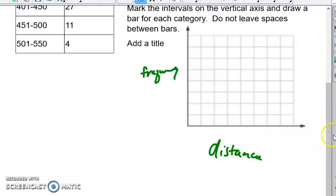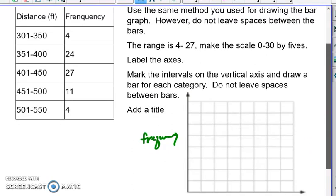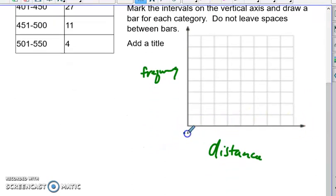And we're going by fives again. So our first one is 301 to 350. So we're going to label that 301 to 350. And how often did they go that far? Four. And we're going by fives. So that's going to be a short one, something like that.